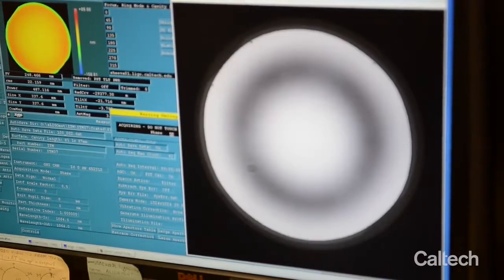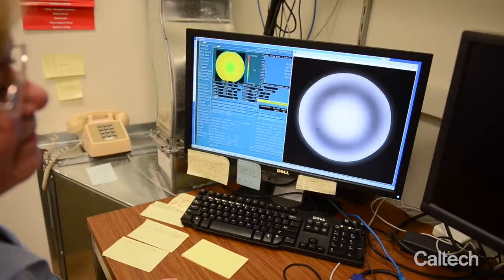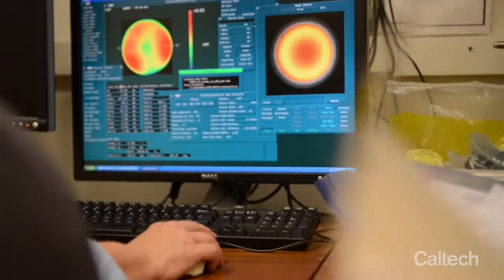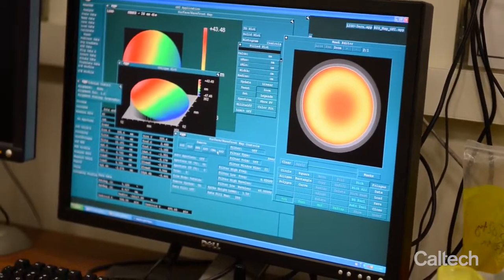The individual surface maps are combined to create a map that is accurate to about one angstrom. These maps are used to create a software model of the entire interferometer.